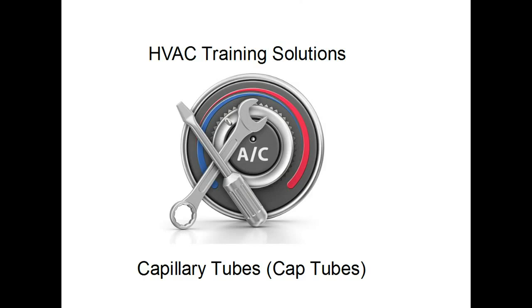Capillary tubes. This is a type of metering device used in small commercial refrigeration equipment like reach-in cooler boxes or small prep tables. The capillary tube is used because it's a rather inexpensive type of metering device and it works very well for this type of application.